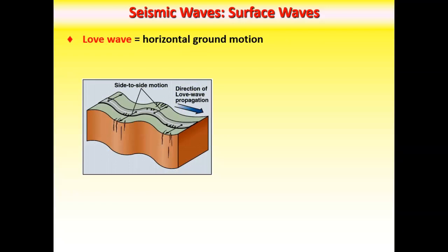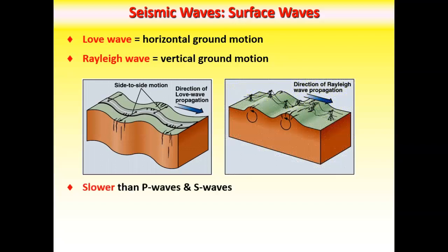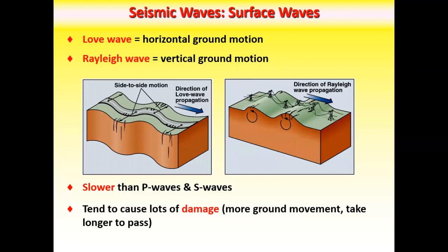So real quick, we have the body waves I just introduced to you: P waves, S waves. Then we have surface waves, two types. We have what's called a Love wave and a Rayleigh wave. And it's just the different motions. One is a more horizontal ground motion. One is a vertical ground motion. The thing about surface waves is they're slower. So they're the last thing that we record. But because they're slow, they take longer to move through an area. They tend to cause more damage. And of course, they're located mostly near surface. They don't penetrate deep into the earth.